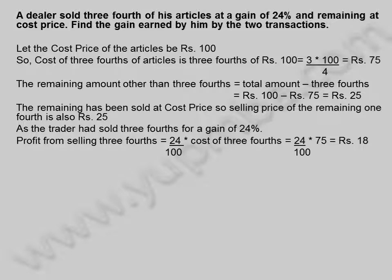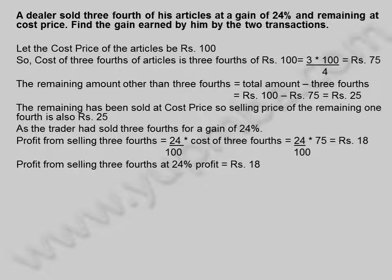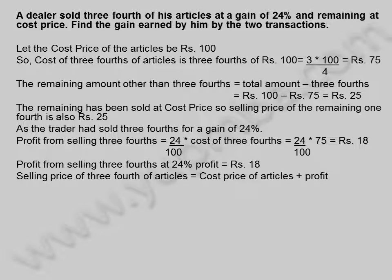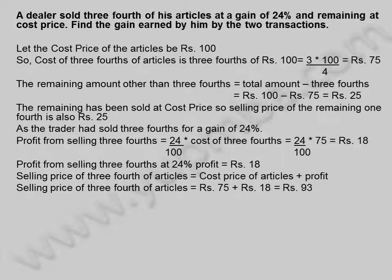As the trader had sold 3/4 for a gain of 24%, profit from selling 3/4 is equal to 24/100 into cost of 3/4, equal to 24/100 into 75, equal to 18 rupees. Profit from selling 3/4 at 24% profit is equal to 18 rupees.